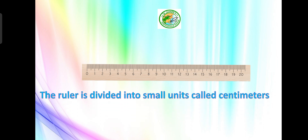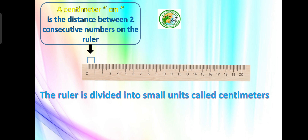The ruler is divided into small units called centimeters. A centimeter is the distance between two consecutive numbers on the ruler.